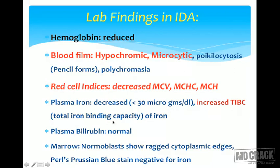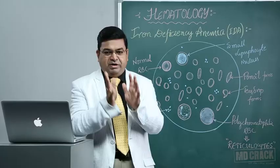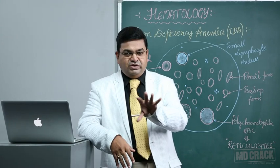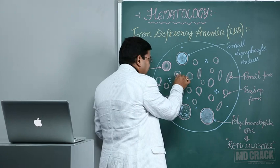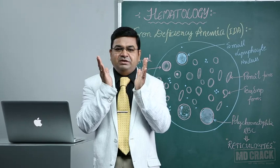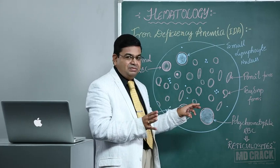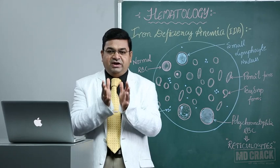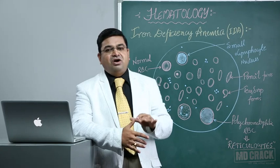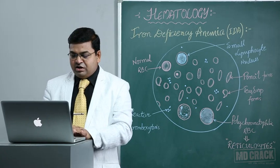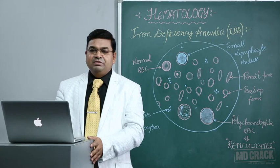Plasma bilirubin is normal in iron deficiency anemia — this is important because thalassemia also shows a similar microcytic hypochromic picture but you will see more target cells. Target cells show increased central pallor and represent hemolytic anemia. Plenty of target cells suggest thalassemia, which also shows splenomegaly and hepatomegaly — features not seen in iron deficiency anemia.